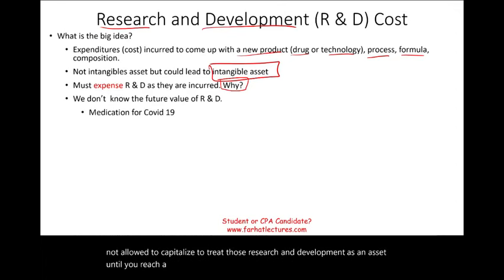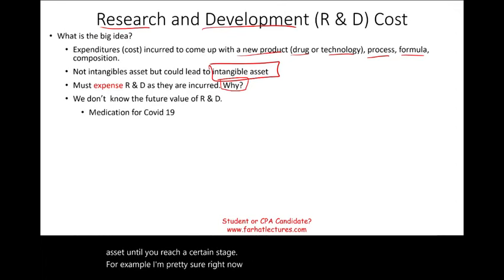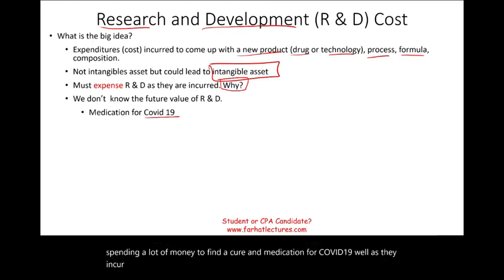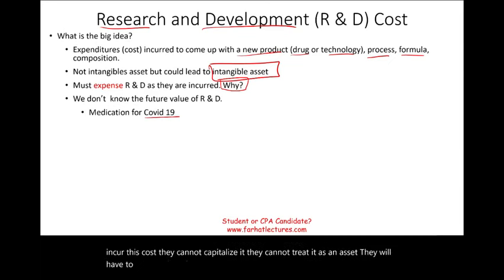For example, many pharmaceutical companies are spending a lot of money to find a cure and medication for COVID-19. As they incur this cost, they cannot capitalize it — they cannot treat it as an asset. They will have to expense it, and it's going to hit their income statement.